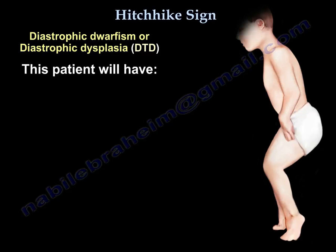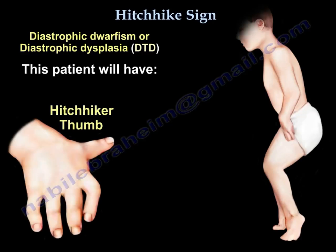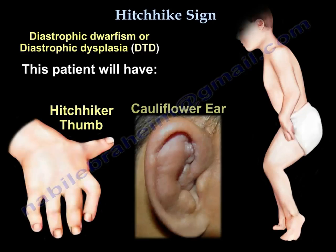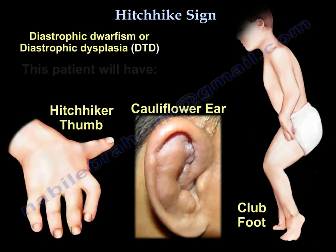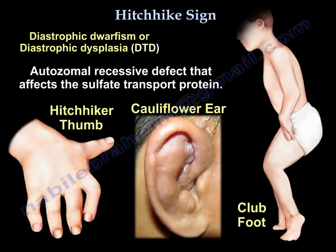This patient has two to three significant features. One of them is a hitchhiker thumb. He also has a cauliflower ear, in addition to clubfoot and other findings. So: hitchhiker thumb and cauliflower ear.